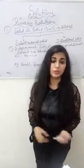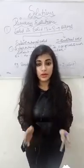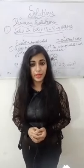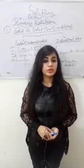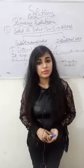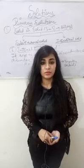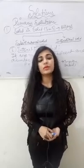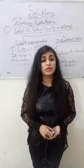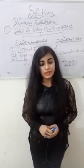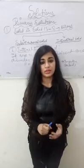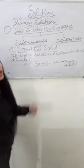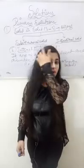Now we will discuss interstitial solids. If the size of the solute and solvent are not similar, then the type of solid formed is an interstitial solid. For substitutional solid, the example was iron plus chromium, as both belong to the d-block elements series with similar properties. For interstitial solid, if the sizes are dissimilar, we get an interstitial solid — the example is iron plus carbon.